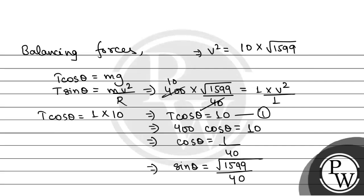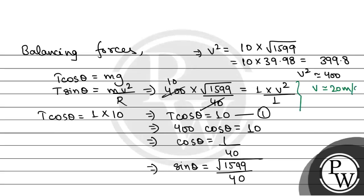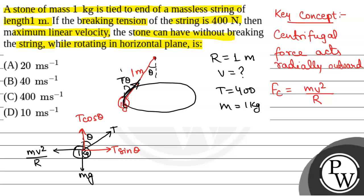Now, √1599 = 39.98. So V² = 10 × 39.98 = 399.8, which is approximately equal to 400. Therefore V² ≈ 400, so V ≈ 20 m/s. This is the maximum linear velocity that can be achieved. The correct option will be option A: 20 meters per second. Hope you all understood it well. Best of luck.